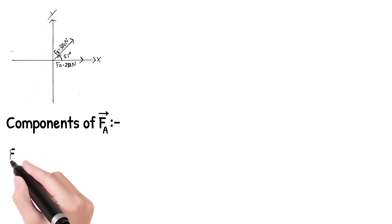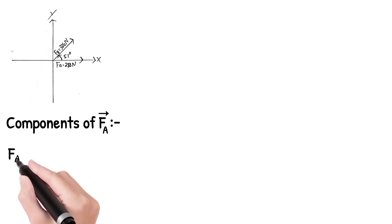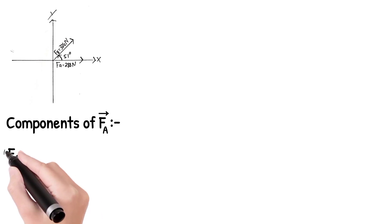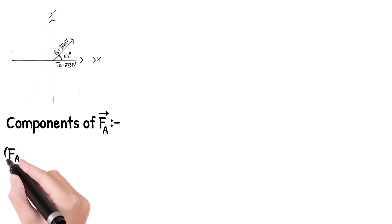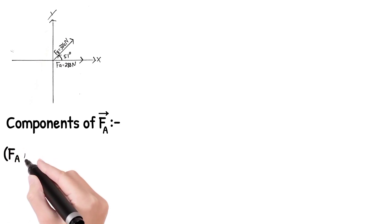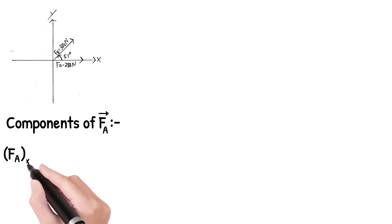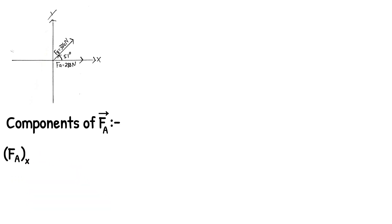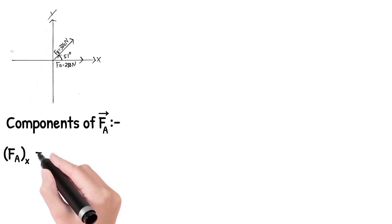So we are using Fa — Fa of x. If Fa of x is in a bracket, let's look at the x component. The x component is along the Fa of x axis. This is the same value.